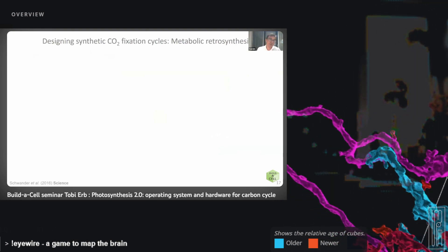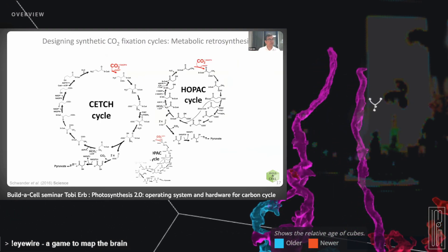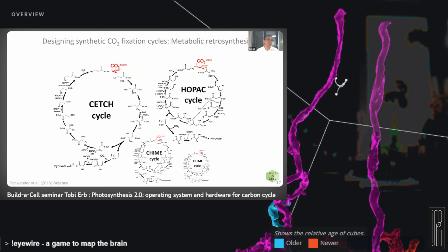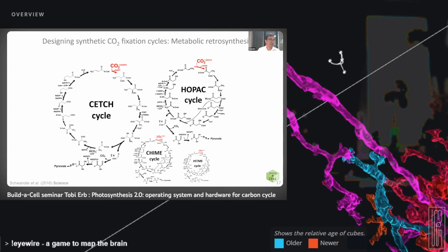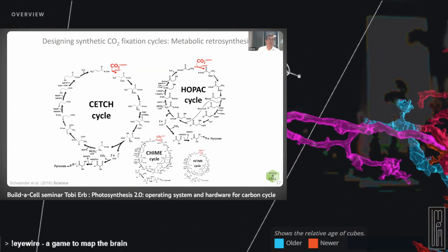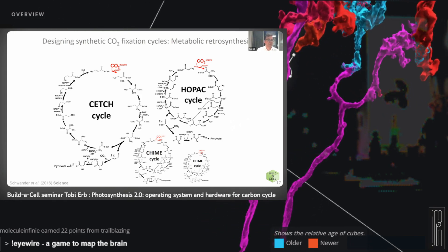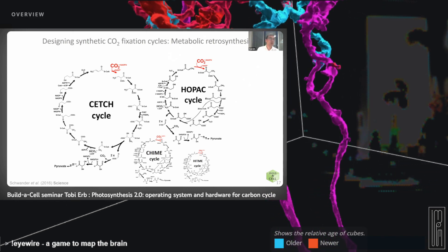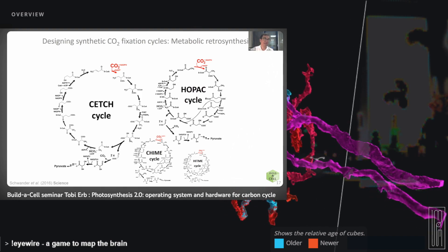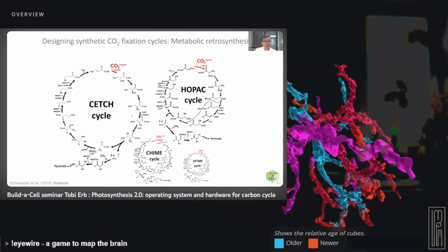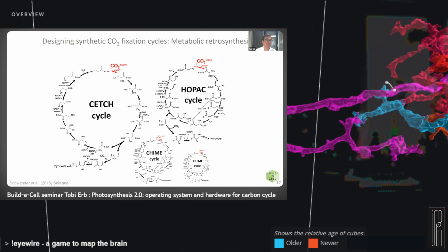How do we design synthetic CO2 fixation cycles? We use metabolic retrosynthesis — thinking about potential hypothetical conversions of metabolites and fixation of CO2. We've published several solutions, for instance the CETCH cycle around seven years ago and the HOPEX cycle just this year. These all look very different in terms of their chemistry and metabolite topologies, but they share common principles. One is that they are all cycles — the product of a CO2 fixation step is turned around to become again the substrate, so you can continuously fix CO2.